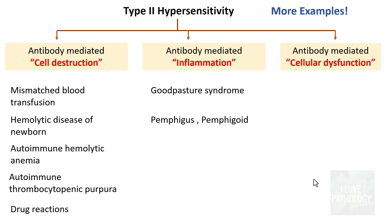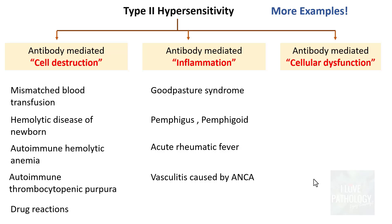For antibody mediated inflammation, we discussed Goodpasture syndrome. Bullous skin reactions are also an example: in pemphigus, autoantibodies against skin desmosomal proteins clinically manifest as blisters — that's why they are called bullous skin diseases. Another important example is acute rheumatic fever, where antibodies against streptococcal M protein cross-react with our own tissues, particularly the heart muscle. Patients manifest with fever, migratory polyarthritis, and carditis, along with various other symptoms. Another example is vasculitis caused by antineutrophil cytoplasmic antibodies (ANCA).